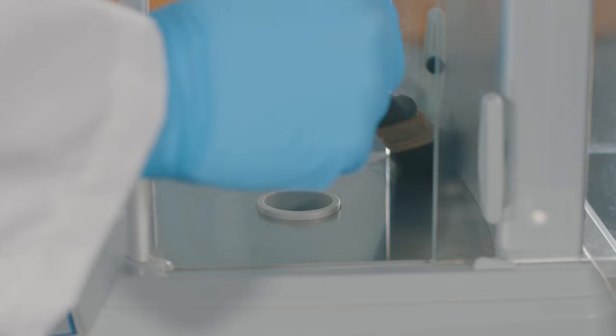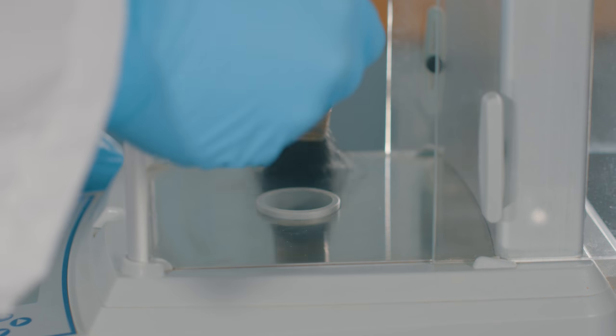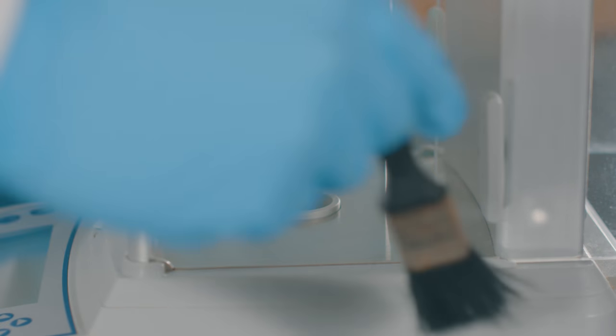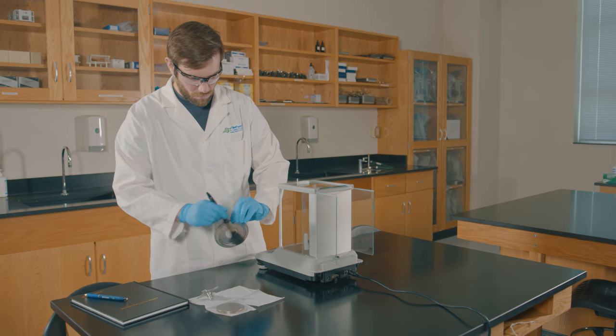Use a very soft bristle paintbrush to sweep off any powder remaining inside the weigh chamber and in the grooves for the glass doors. Once it's clean, replace the drip ring and the weigh pan.